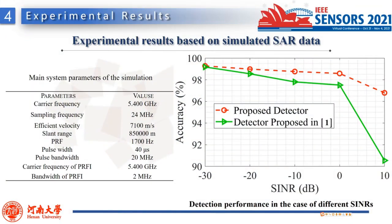Experimental results based on simulated and measured airborne SAR data have been conducted. The main system parameters of the simulation are summarized in a table. In the simulation, PRFI with linear frequency modulation form is assumed. The detection accuracy metric is employed to evaluate the detection performance. Results show that the detection accuracy of the proposed detector is generally higher than that of TDD.